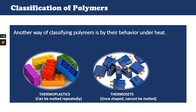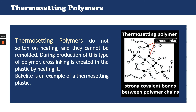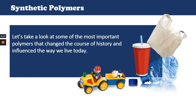Another way of classifying polymers is by their behavior under heat. Thermoplastic polymers are polymers that become soft when they are heated. Because they soften and melt on heating, they can be repeatedly remolded, making it easier to recycle thermoplastics. PVC, polyethylene and polystyrene are examples of thermoplastics. Thermosetting polymers do not soften on heating and cannot be remolded. During production of this type of polymer, cross-linking is created during the process of manufacture. Bakelite is an example of a thermosetting polymer.